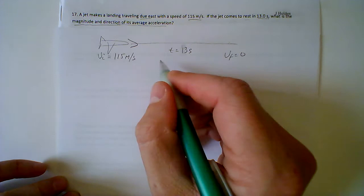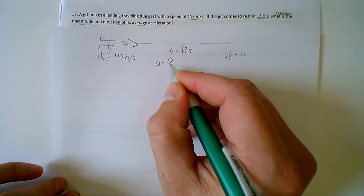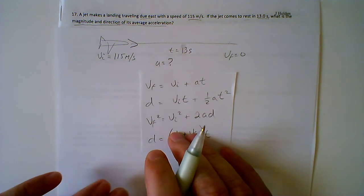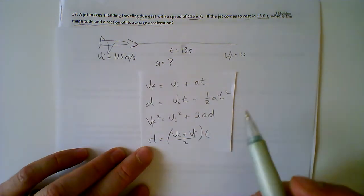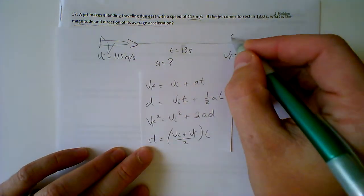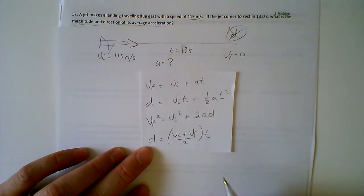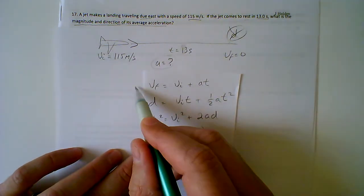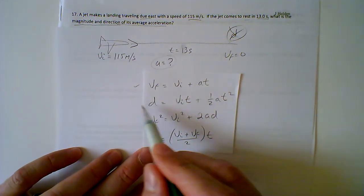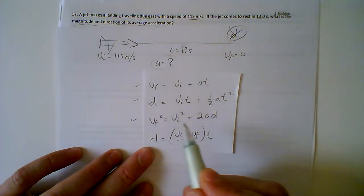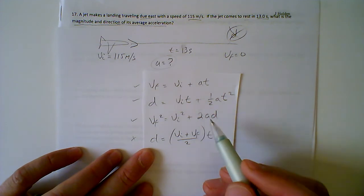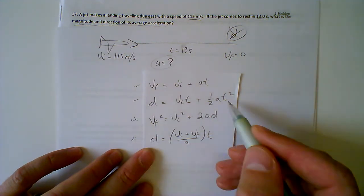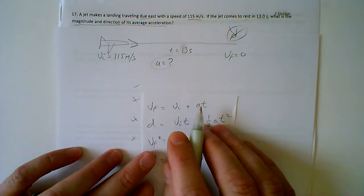Coming this way, going to rest — A equals question mark. Same sort of way we go about answering the problem: we want to find out what we don't have and aren't concerned with. This is another one where we don't even care about D. If an equation has D in it, we can't use it. We need something that has A in it. This equation has A. We don't want D — this has D, this has D. Same equation we've been using.